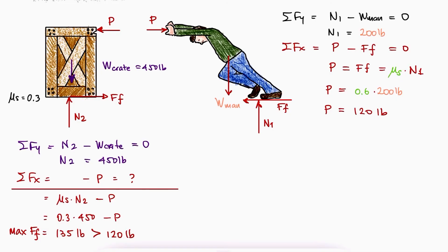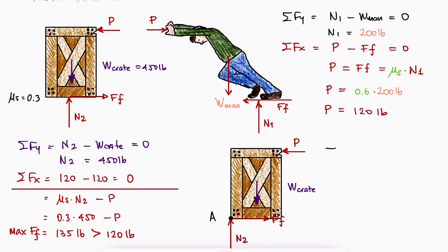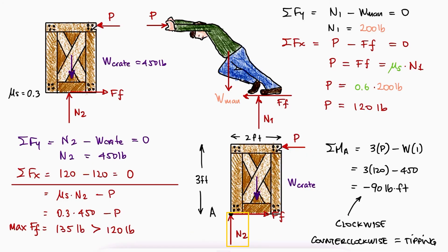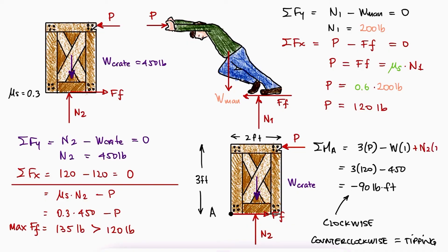The actual friction force on the crate would be 120 pounds and the crate would be under equilibrium. For tipping the crate, a sum of moments about the bottom left corner A shows the box would rotate clockwise — not counterclockwise — which means it is not tipping over. This doesn't mean the crate rotates clockwise; it means the normal force from the floor is not at corner A but near the center, creating an additional moment resulting in a sum of moments of zero. Therefore, the man cannot push hard enough to either slide or tip over the crate. Thanks for watching.